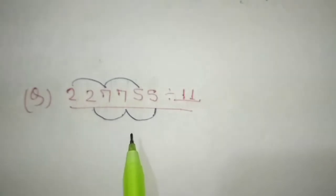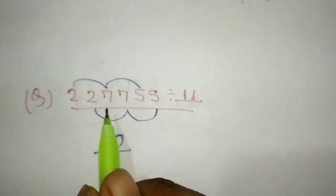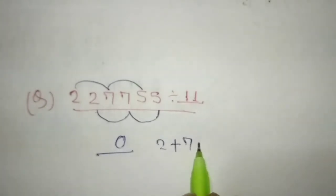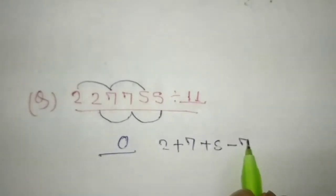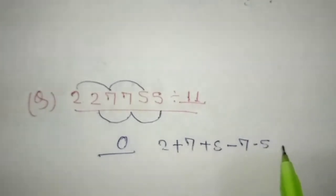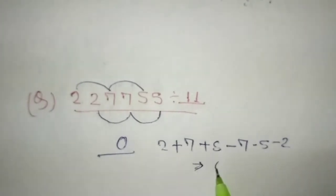So we know the result is 0. Let's see: 2 plus 7 plus 5 minus 7 minus 5 minus 2 equals 0.